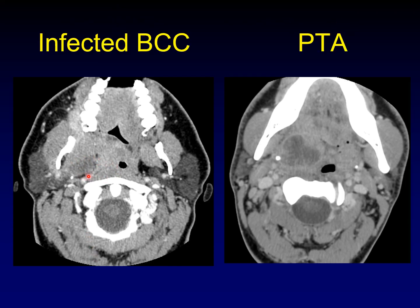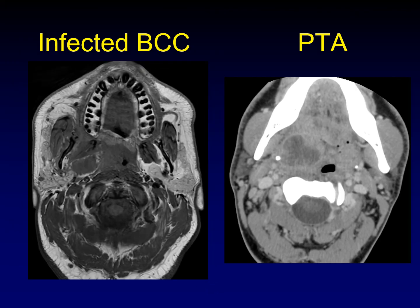So that's the difference between an infected second branchial cleft cyst and a complex peritonsillar abscess. The key finding to making this diagnosis is this rim of fat all the way around the infected cyst. If this were a peritonsillar abscess or extension of a peritonsillar abscess, this fat would not be here between the tonsil and the cyst.